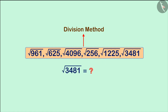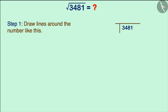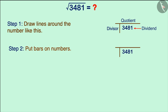For example, take the number 3481 and let's try to find its square root by the division method. We will use this method in various stages. First, let's draw lines like this. We will place the dividend here, the divisor here, and the quotient here. After this, we will place a bar on each pair of digits starting from the units place of the given number. We have four digits here, so two pairs will be formed and only two bars will be placed.